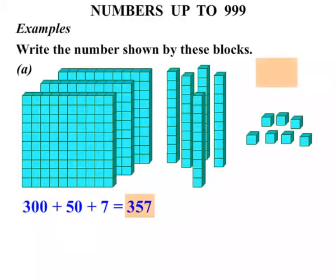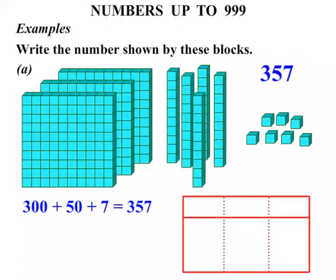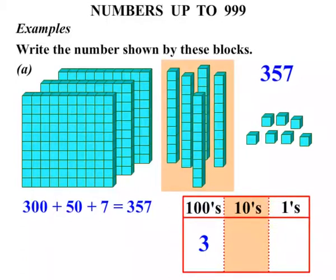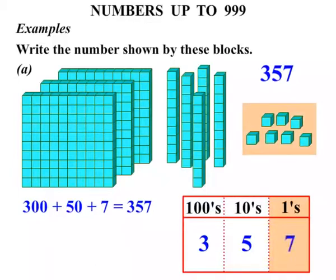Now let's write that up the top here. We are going to look at it a different way too, using a table with columns. The right hand column is ones, the next one is tens, the next column is hundreds. Now let's consider the hundreds firstly. There were 3 flats, so we have 3 lots of hundreds. Now the tens were represented by the longs. We had 1, 2, 3, 4, 5 of them. So let's write 5 in the tens column. And finally the ones, we had 7 of them. So we can see 3, 5, and 7 makes the number 357.